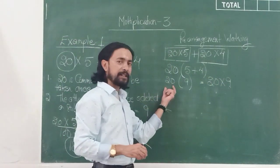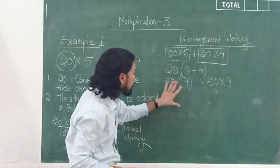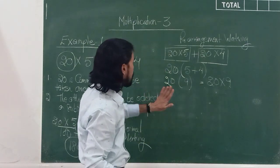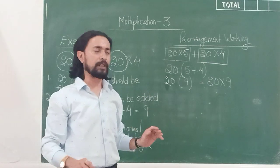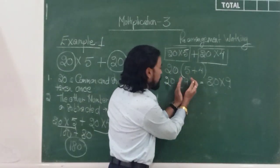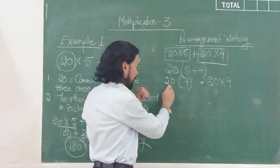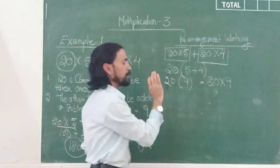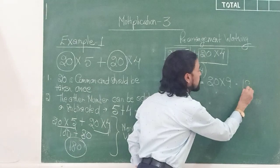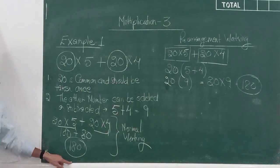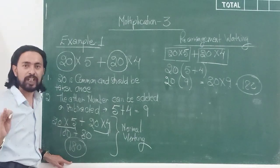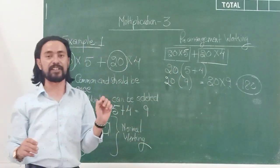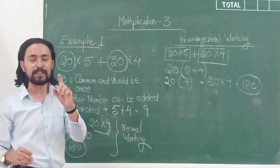So I multiply 20 by 9 and get the answer 180. You can see the answer still remains the same — it does not change. The normal working gives 180 and the rearrangement working also gives 180. This is the working you apply using rearrangement for this particular kind of sum — that is multiplication concept number 3.